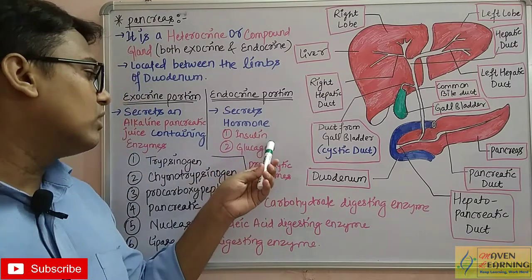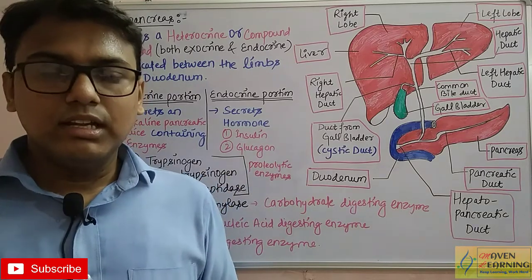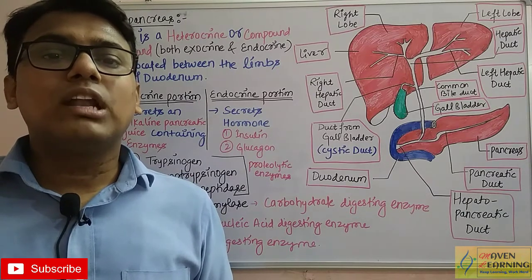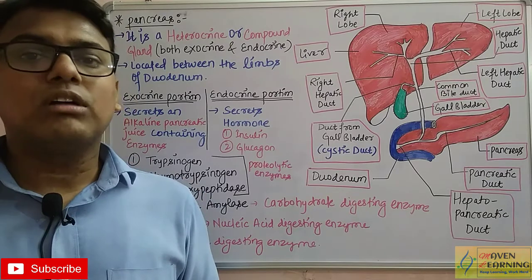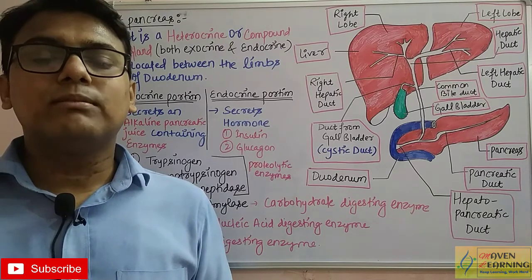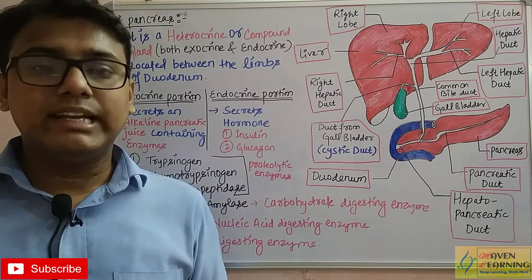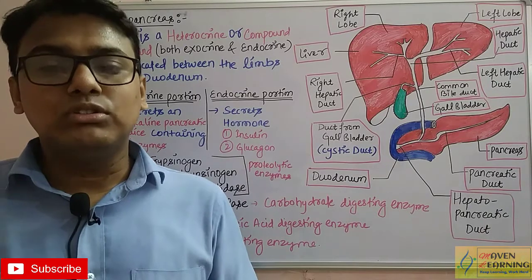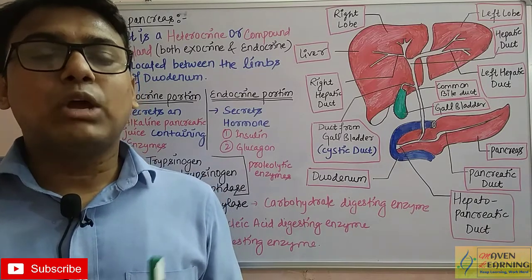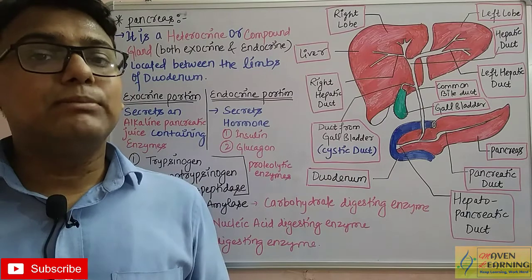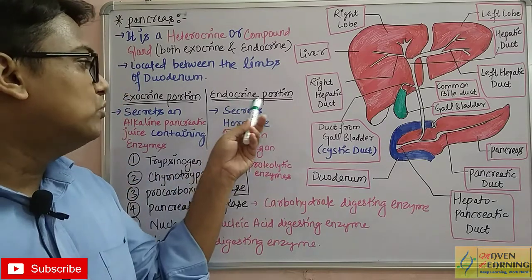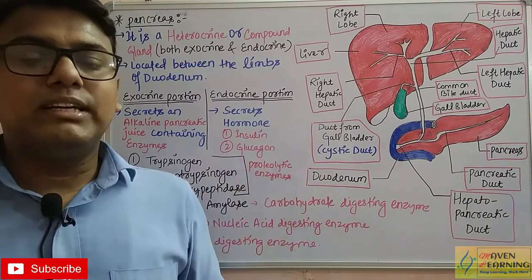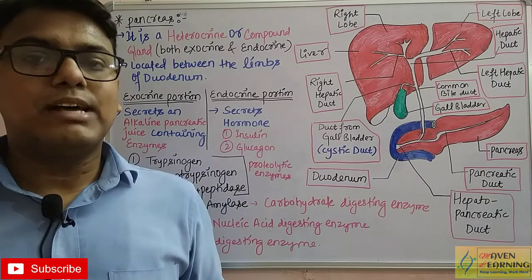The endocrine portion of the pancreas releases hormones — insulin and glucagon. Insulin decreases blood sugar level, and glucagon increases blood sugar level. When we cover the hormone chapter, we will discuss in detail how insulin and glucagon together regulate blood sugar levels.